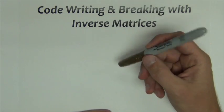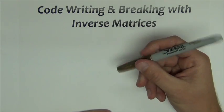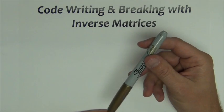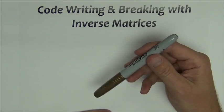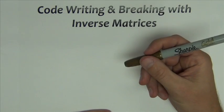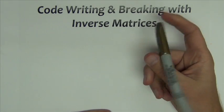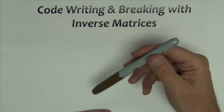In this activity we're going to go over how we can use matrices to code messages and then how we can use the inverse of those matrices to break the coded messages or to decode our messages.